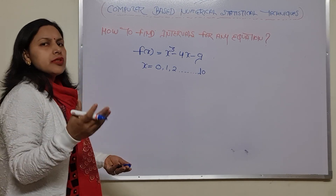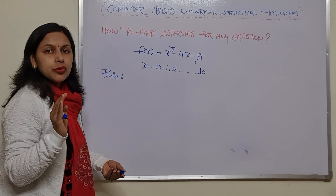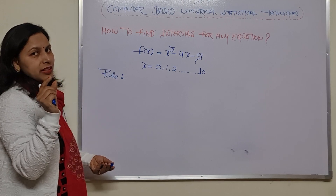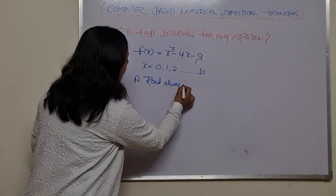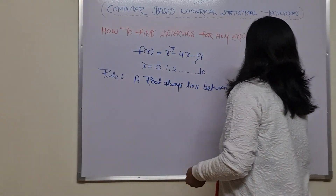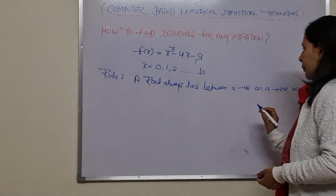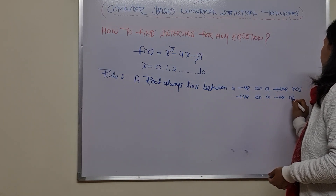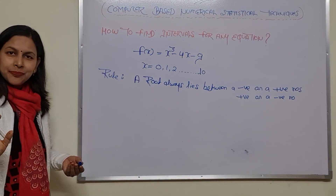There is one rule: the approximate root always lies between a negative and a positive number — or vice versa. So the interval we are looking for will always have one negative and one positive function value at its endpoints.